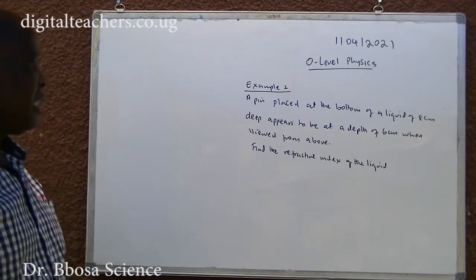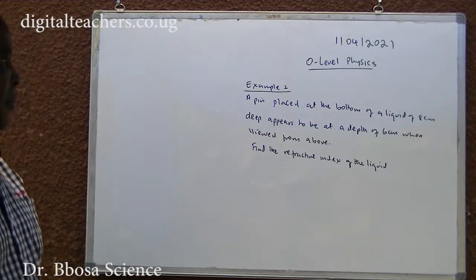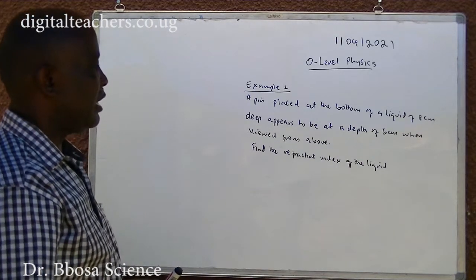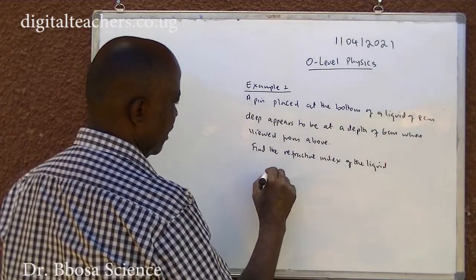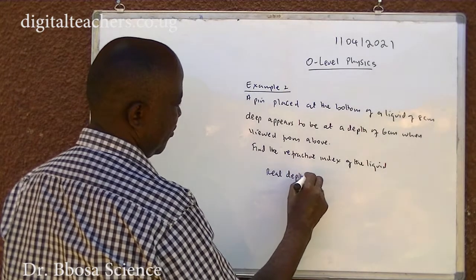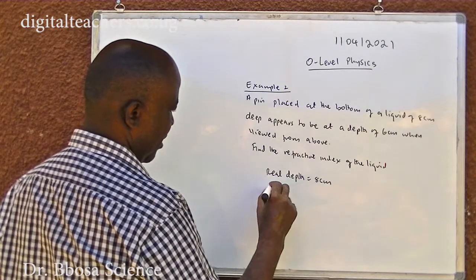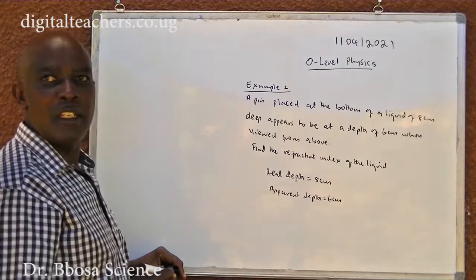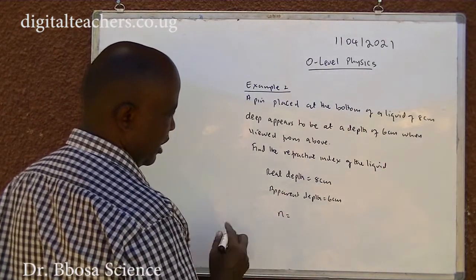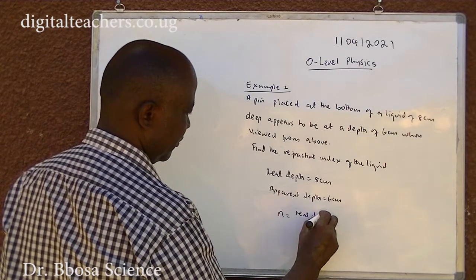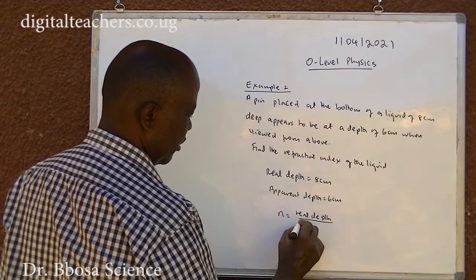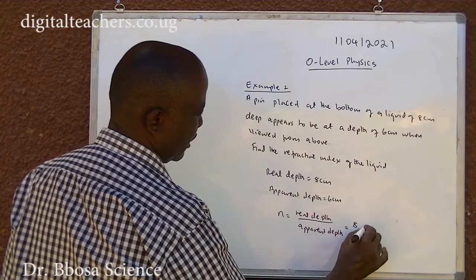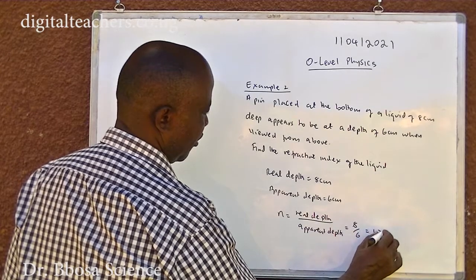Example 2: A pin placed at the bottom of a liquid of 8 cm deep appears to be at a depth of 6 cm when viewed from above. Find the refractive index of the liquid. In this experiment, real depth is equal to 8 cm. Then apparent depth is equal to 6 cm. Refractive index is equal to real depth over apparent depth, which is equal to 8 over 6, which is equal to 1.33.